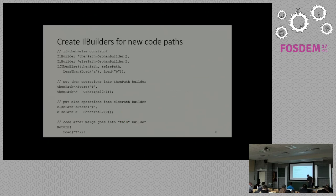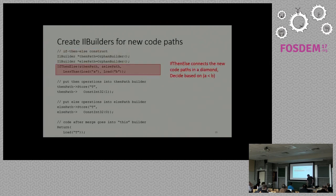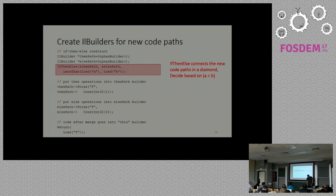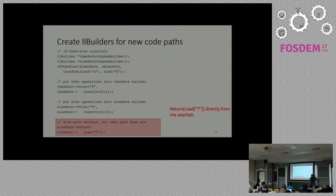JIT Builder also supports control flow with different code paths. For example, in the Lua interpreter for an add opcode, if your type is an int you do one kind of add, and if it's a float you do another. To handle this, you create a couple of builders for the different paths, then use if-then-else: if A is less than B, execute the then-path builder, otherwise execute the else-path builder.